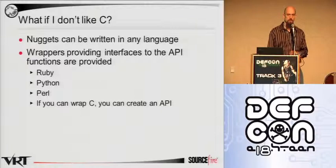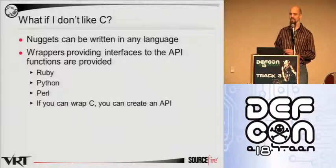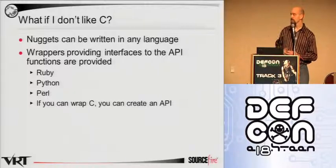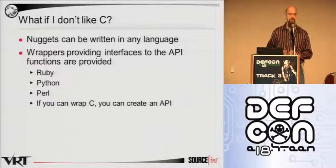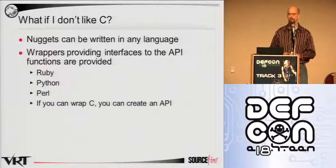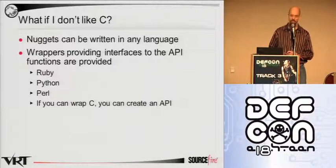What if you don't like C? Well, shame on you, but if you want to use some sort of scripting language, we do cater to that. We don't actually have these APIs available right now but they're close — Ruby, Python, and Perl. If you have any other language you wanted to write nuggets in — Haskell, Smalltalk — just create a C wrapper. If it's available, it can be done.